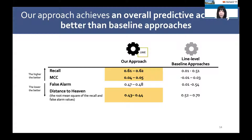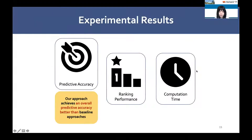In terms of predictive accuracy, our empirical evaluation shows that our approach achieves overall predictive accuracy better than the baseline approaches in terms of recall, MCC, and effort-aware metrics — which combine recall and false alarm rate. Even though some baselines perform better in terms of false alarm rate, many defective lines are still missed by the baseline approaches according to the recall value. We conclude that our approach achieves better overall predictive accuracy than the baseline approaches.